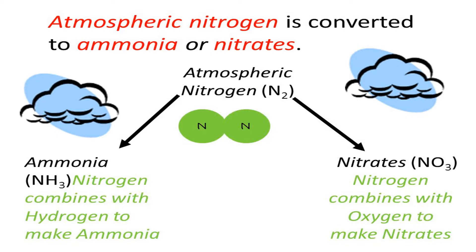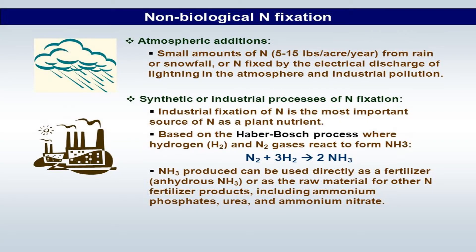Atmospheric nitrogen is converted into ammonia or nitrates. If nitrogen combines with hydrogen, it makes ammonia; if it combines with oxygen, it gives nitrates. Whether it's combining with hydrogen or with oxygen — that is what matters.